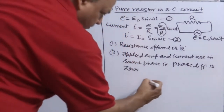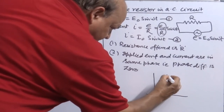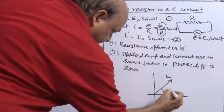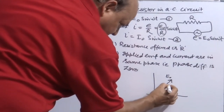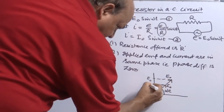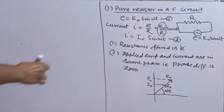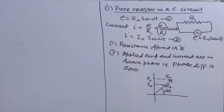When you plot a phasor diagram, E₀ is already at angle ωt. Since I₀ is also at the same angle, you mark I₀ on the same line. This is the phasor diagram for a pure resistor. In summary, if a resistor is placed in an AC circuit, its behavior remains the same as in a DC circuit — it offers resistance equal to R.